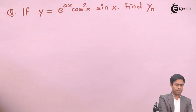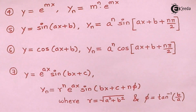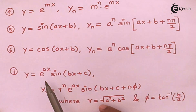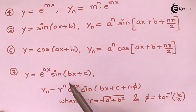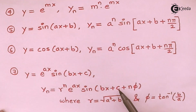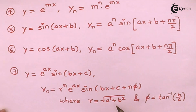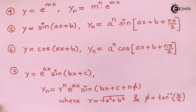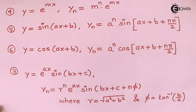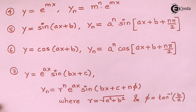On the screen you can see the formula: when y = e^(ax) sin(bx + c), the nth derivative is r^n · e^(ax) · sin(bx + c + nφ), where r = √(a² + b²) and φ = tan⁻¹(b/a). This formula was derived in a previous video.